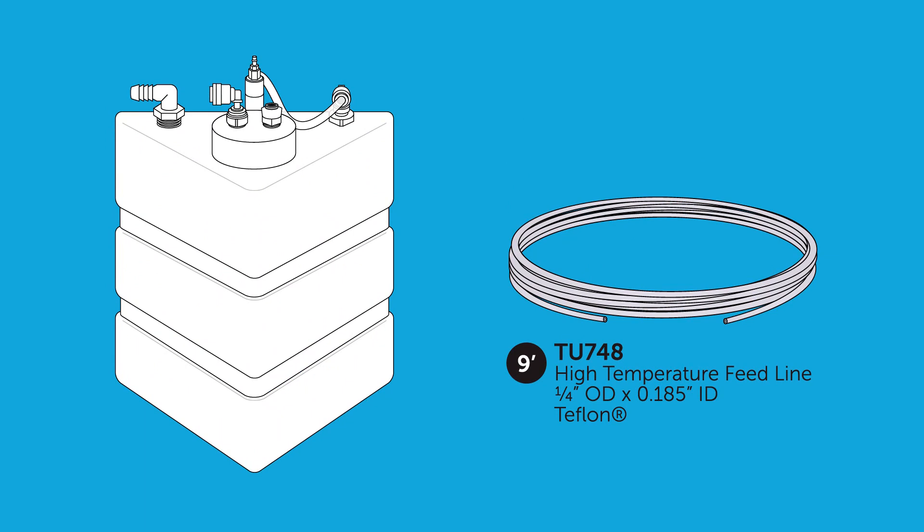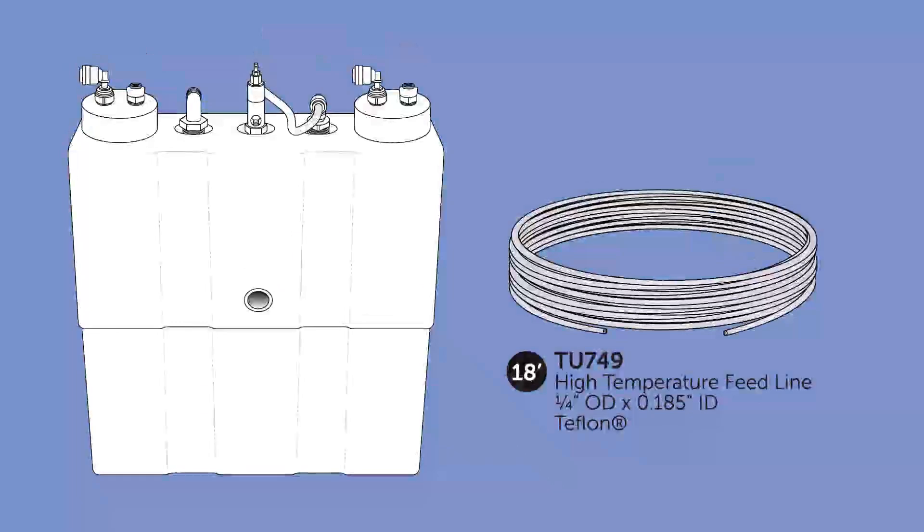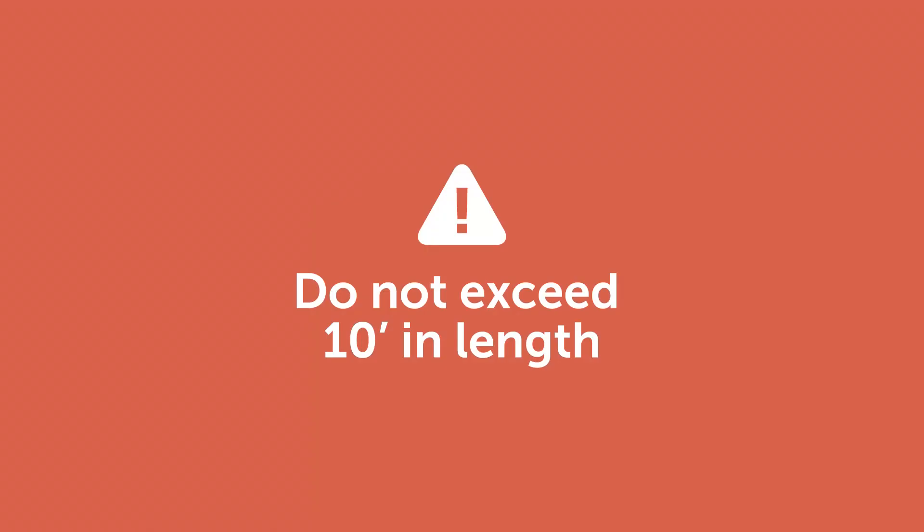A 9-foot length of the high temperature Teflon tubing is included with each model V7501 for a single autoclave, and an 18-foot length is included with each V7502 system. It's important not to exceed 10 feet in length for any individual section of tubing between a sterilizer and the VistaCool.